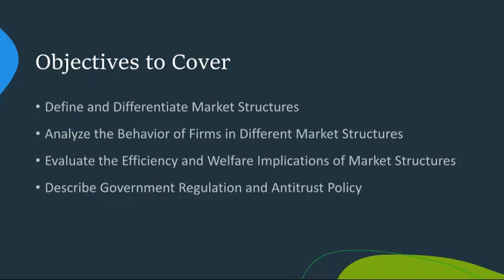Our first objective is to define and differentiate market structures. Market structures are the foundation of understanding how firms operate within an economy. We have four primary market structures: perfect competition, monopoly, monopolistic competition, and oligopoly. Perfect competition features many small firms with identical products, no product differentiation, and ease of entry and exit. A monopoly is a market with a single seller, often with significant barriers to entry, giving the firm a lot of control over prices. Monopolistic competition involves many firms but each offers slightly different products. Finally, an oligopoly is characterized by a few large firms that dominate the market.